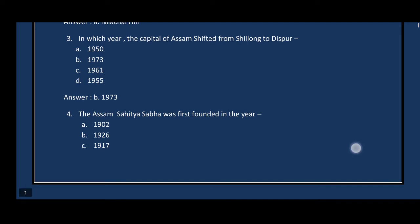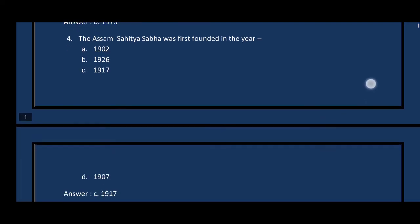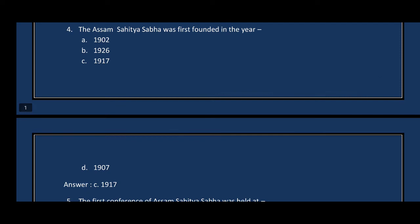Question number four: The Assam Sahitya Sabha was first founded in which year? The correct answer is option C — 1917.